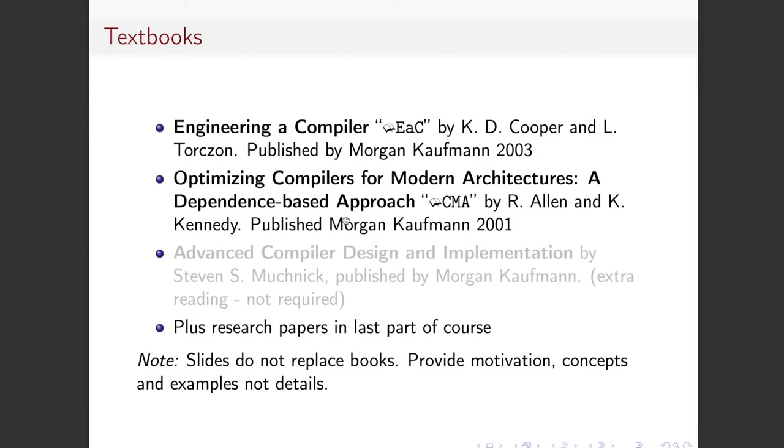So we have some textbooks for you guys to look at. All of these should be available for download online, or you can buy them from a shop or get them from the library. The first one is Engineering a Compiler by Keith Cooper and Linda Talkson. A very good book, and it's what we're going to be spending the first part of the lecture series going through. You will see occasionally through the slides a little book sign like this. We'll then move on to Optimising Compilers from Modern Architectures by Alan and Kennedy. Again, available for download, and that will be where we'll deal with dependency analyses and things like this.